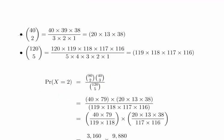The denominator term is 120 choose 5, so 120 times 119 times 118 times 117 times 116. As it happens, 120 cancels out with 5 times 4 times 3 times 2 times 1, so we're just left with 119 times 118 times 117 times 116.